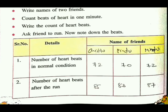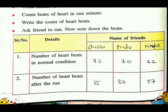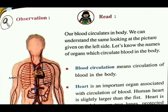Next, ask your friend to run, then note down the beats. जैसे कि run करने से पहले और run करने के बाद क्या beats होती है — यह आपको लिखनी है, दोनों की अलग-अलग आएगी. Number of heartbeats in normal condition — जैसे कि 72 होती है, और run करके आया है तो वो बढ़ जाती है। Run करने के बाद और run करने से पहले दोनों के heart speeds अलग-अलग होंगी.